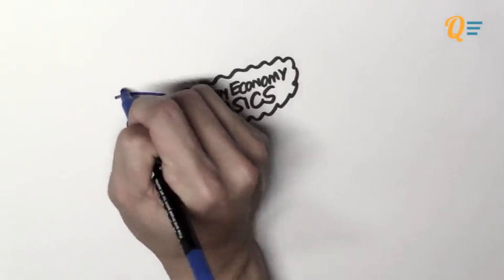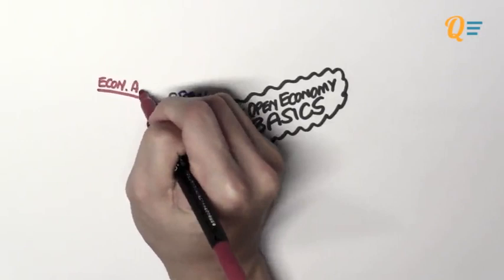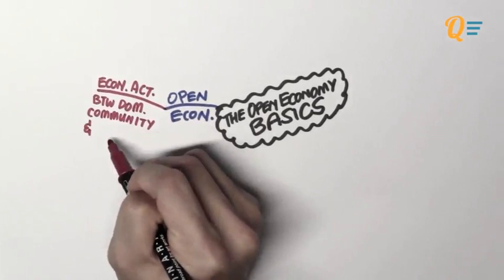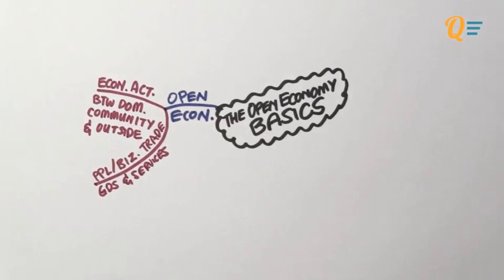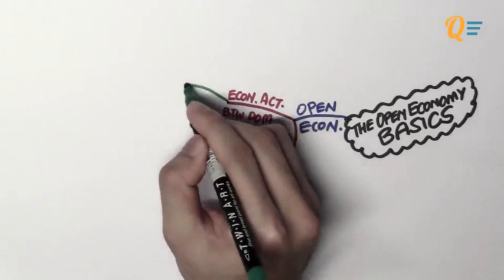So what is an open economy? An economy is known to be open when there is economic activity between a domestic community and an outside community. Before this, we were only talking about one single country. Now we're going to bring in more countries into the picture. What's happening between these countries is that there are people or businesses that are trading goods and services, and the trading of goods and services is known as economic activities.